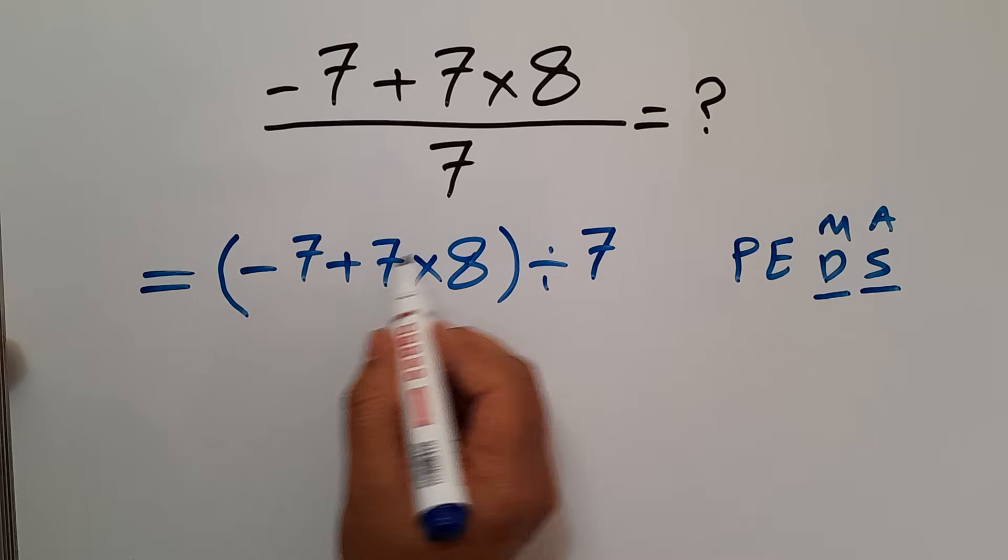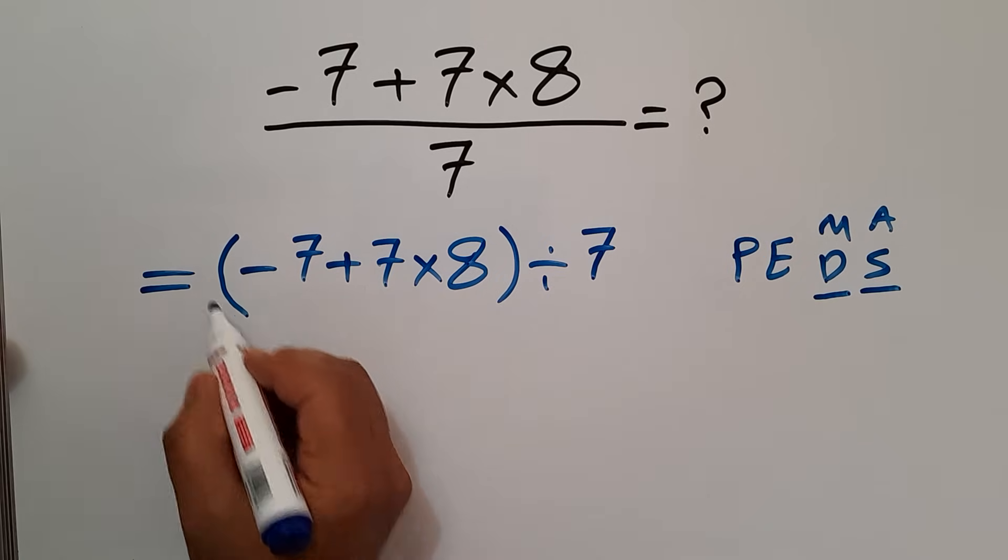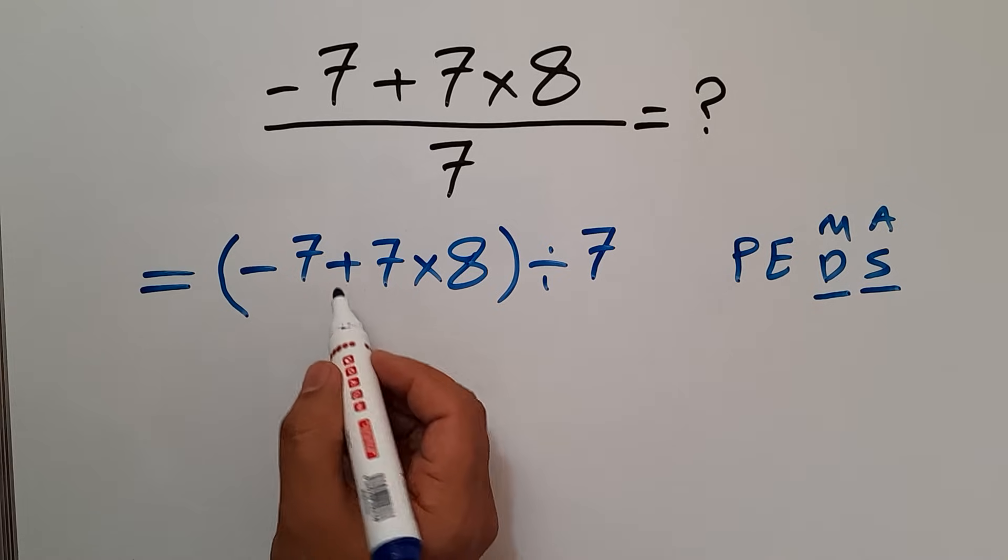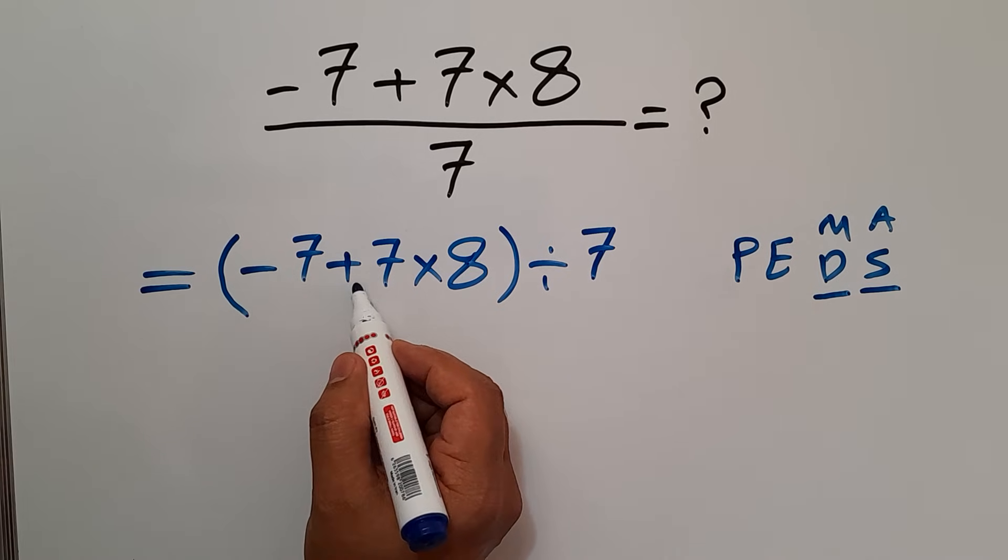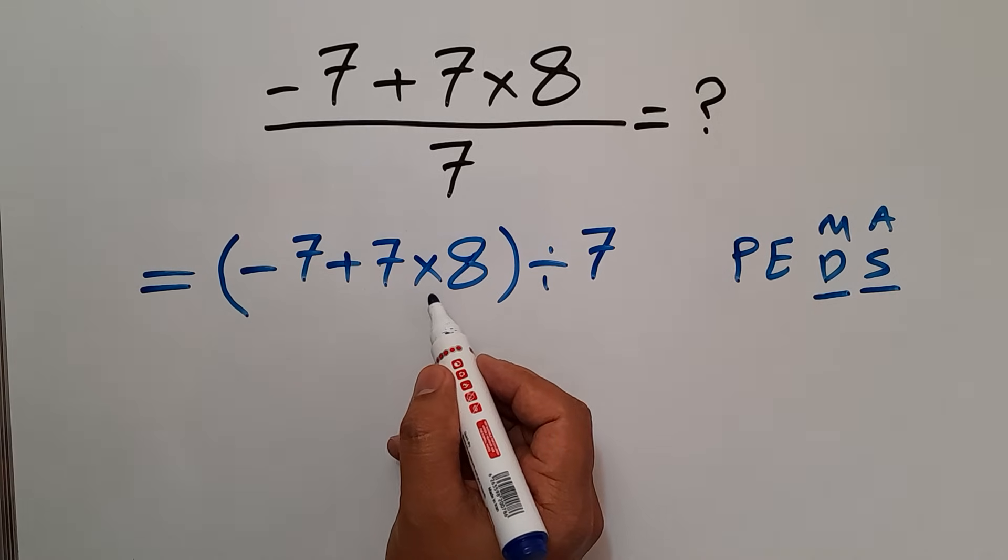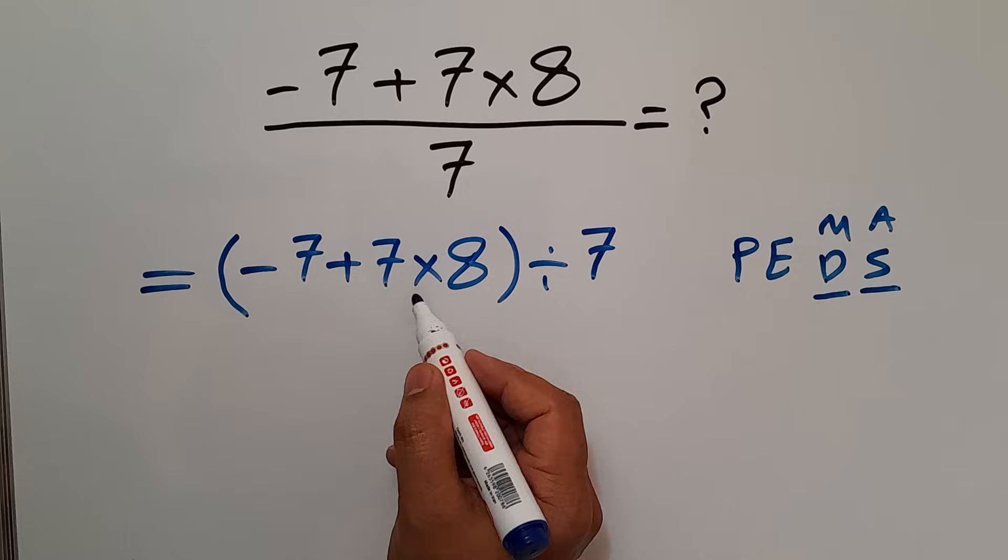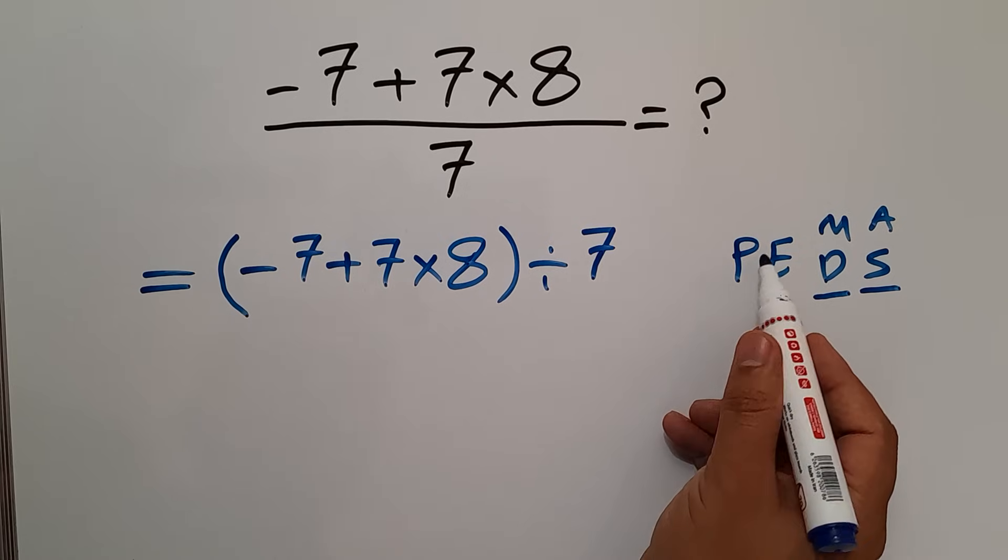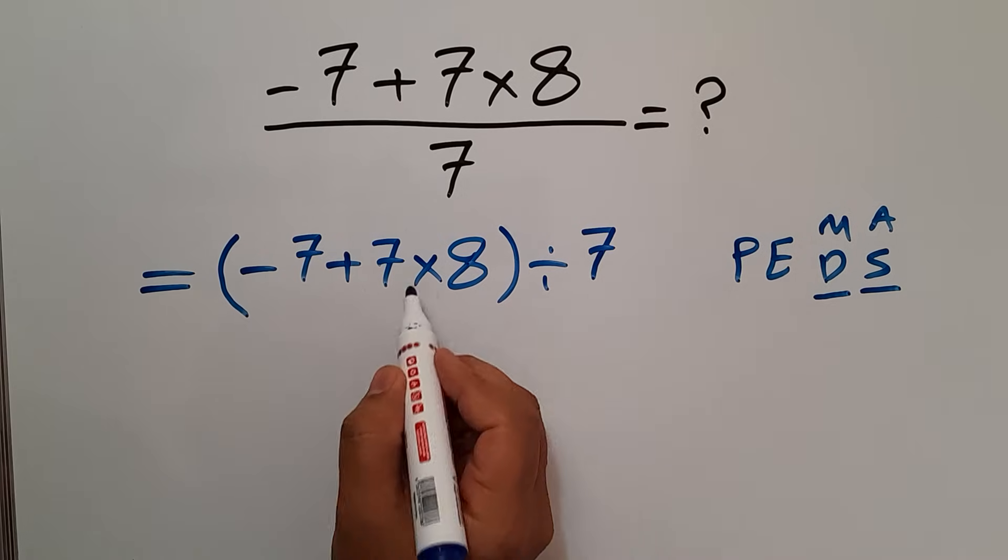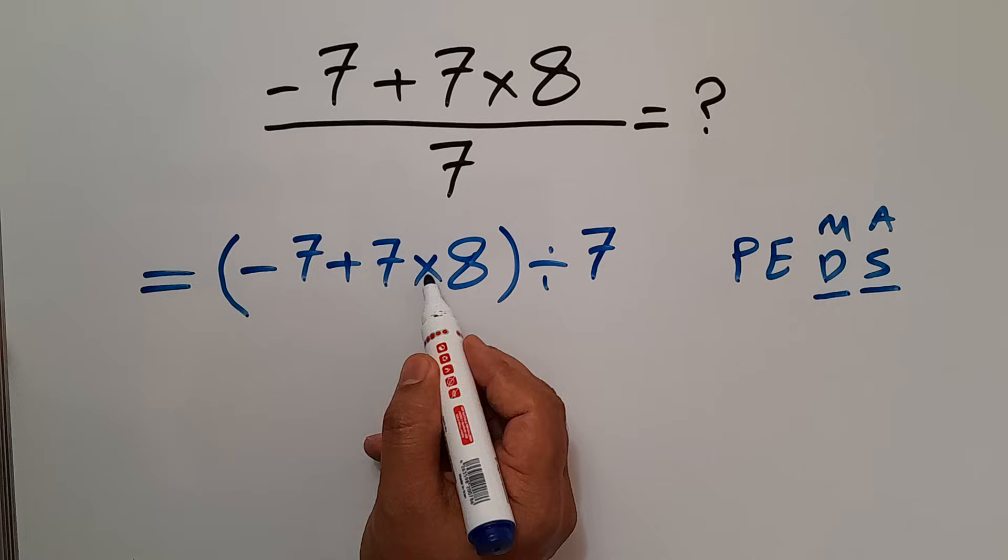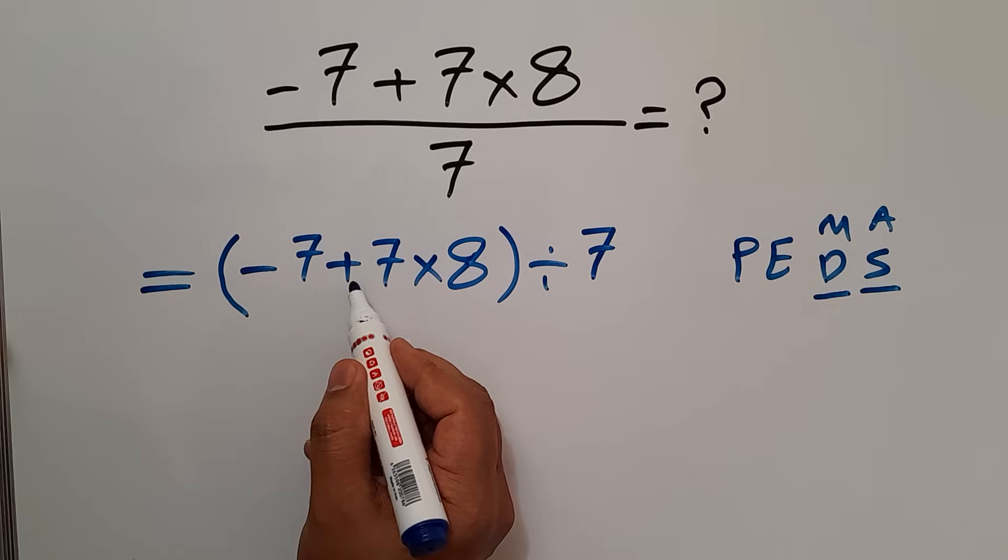So, here, first, we have to handle these parentheses. And inside these parentheses, we have one addition and one multiplication. According to the order of operations, which is PEMDAS, multiplication has higher priority than addition.